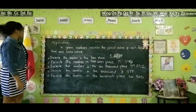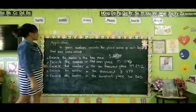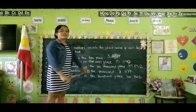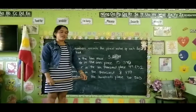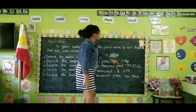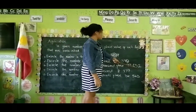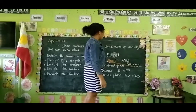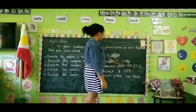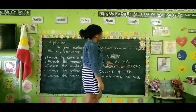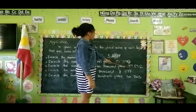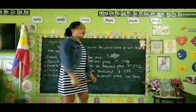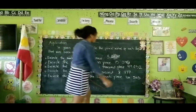Encircle the number in the ten thousands place — 99,822. 2 is for ones place, 3 is for tens place, 8 is for hundreds place, 9 is for thousands place, and 9 is for ten thousands place. So, the answer is 9.